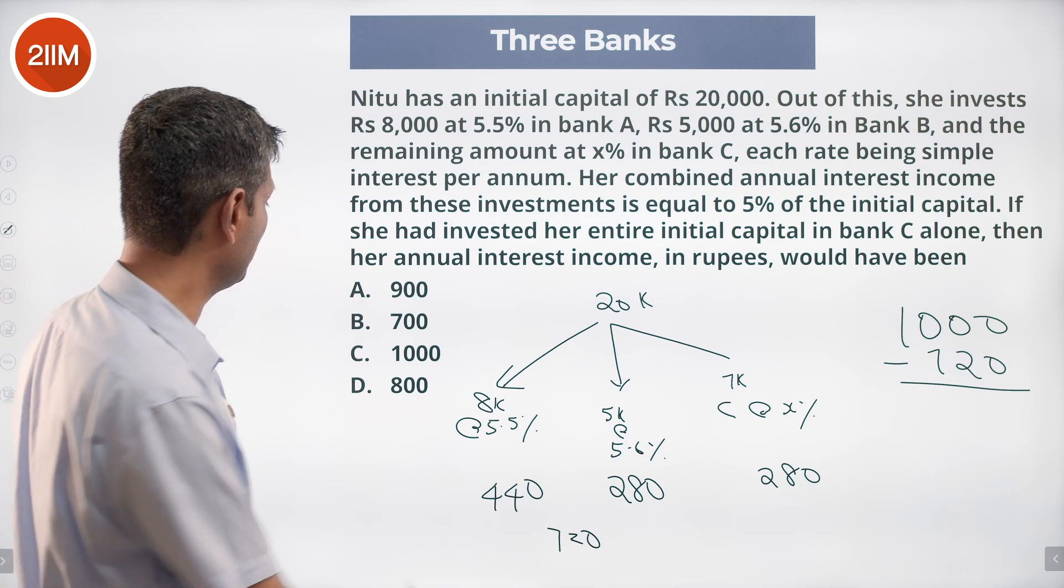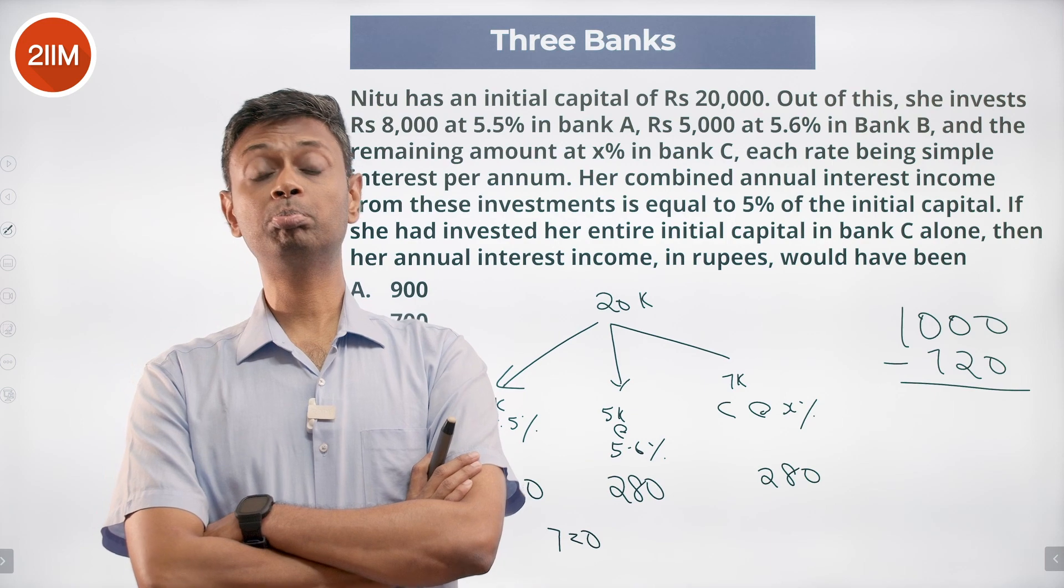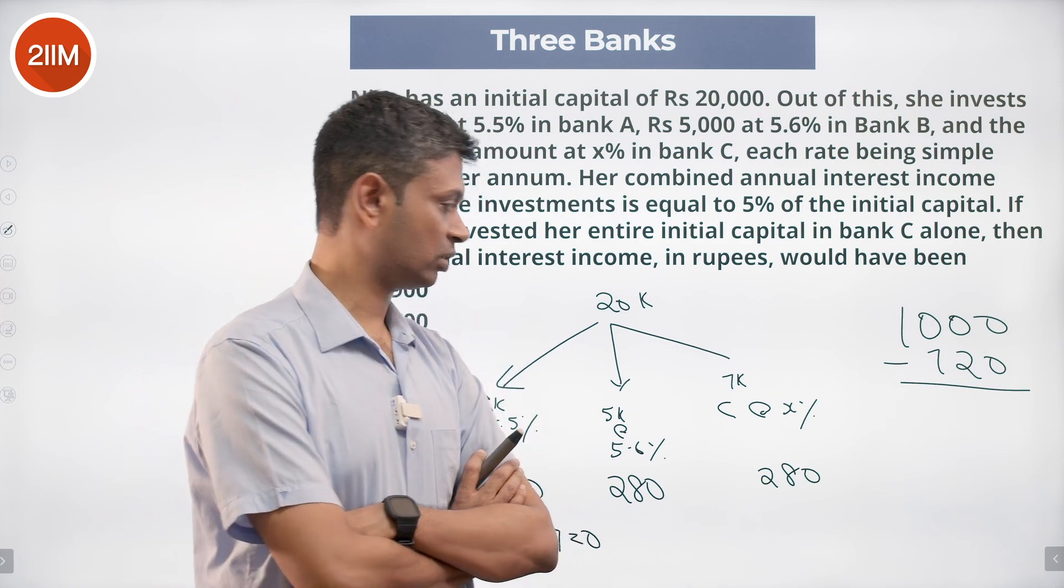If you had invested the entire amount there, 20K at 4% gives us 800. Rather juicy simple arithmetic question. You should look at this and gobble it up.